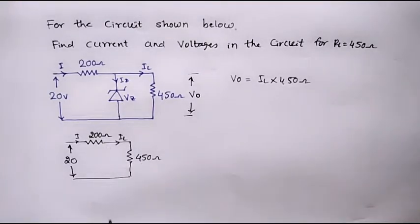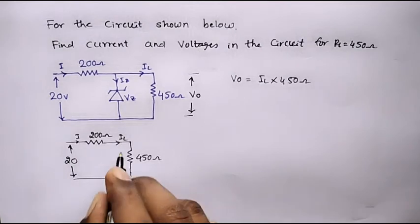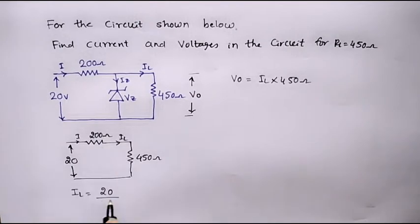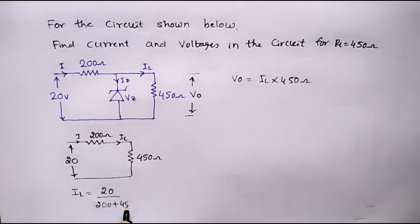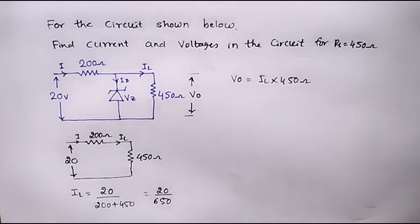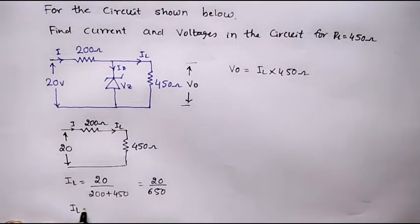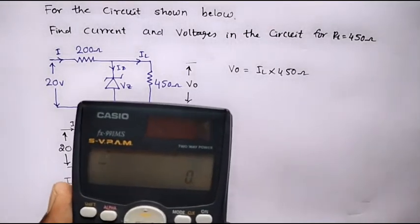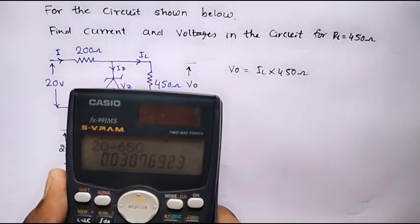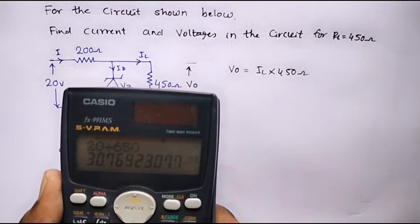Now we calculate current IL, which is equal to I. IL equals 20 divided by 200 plus 450, which equals 20 divided by 650. Therefore, the load current IL equals 20 divided by 650, which is 30.76 milliamps.